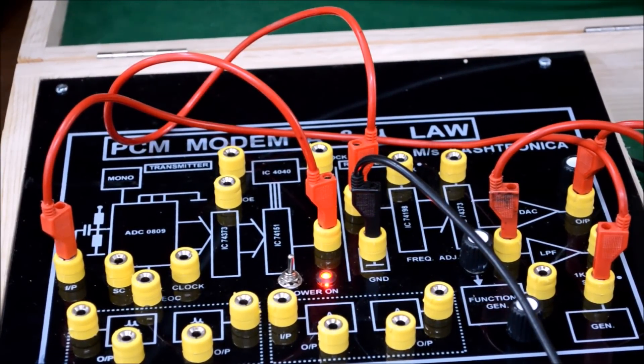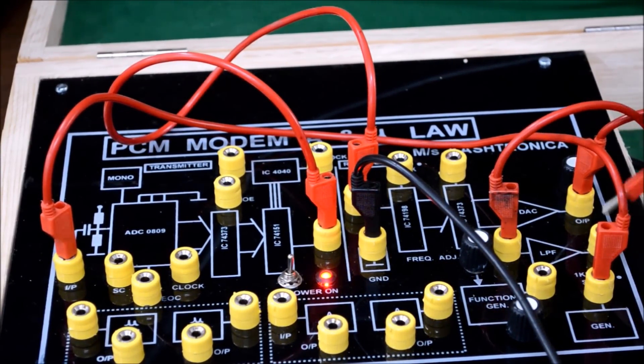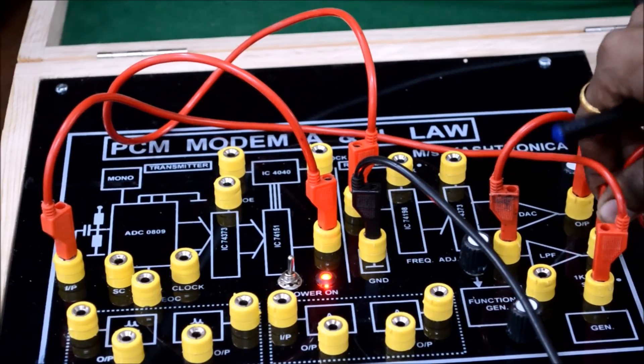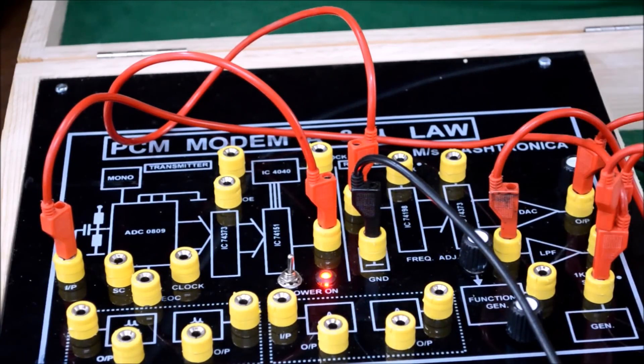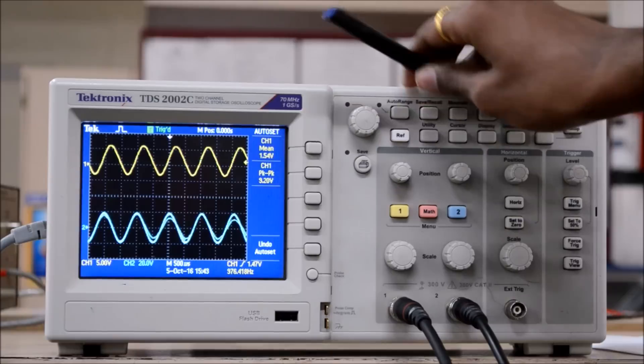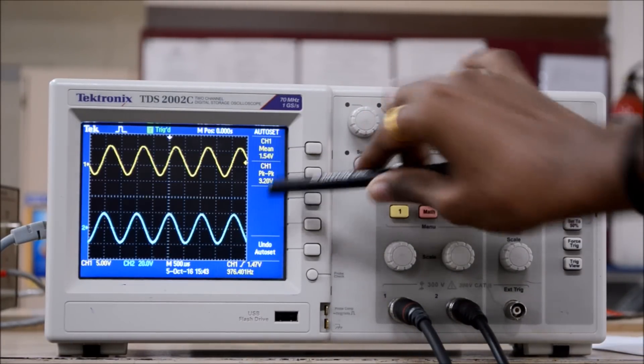For comparing the recovered signal and the source signal, we will be using 2 probes. One probe will be connected to the output of the low pass filter and another probe will be connected to the generation of our signal. As you can see, the above one is the source signal and second one is the signal obtained from a low pass filter after transmission and reception.